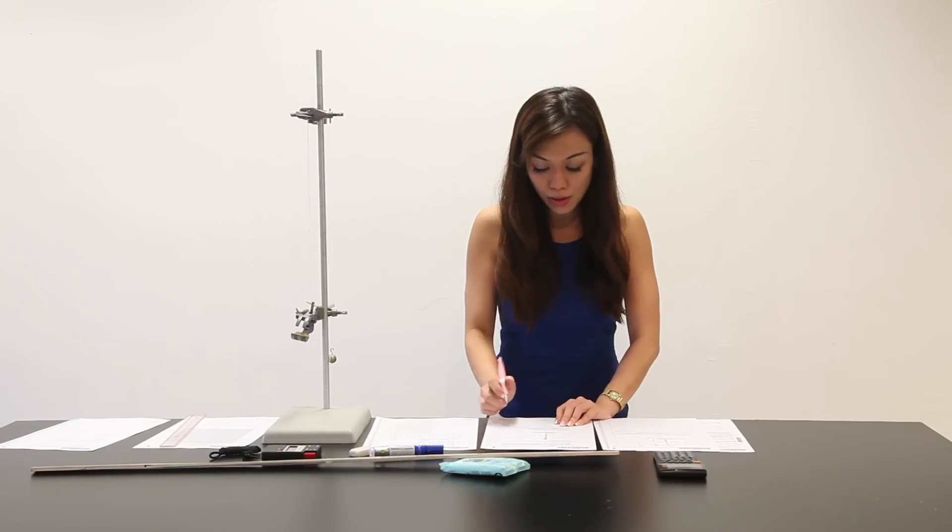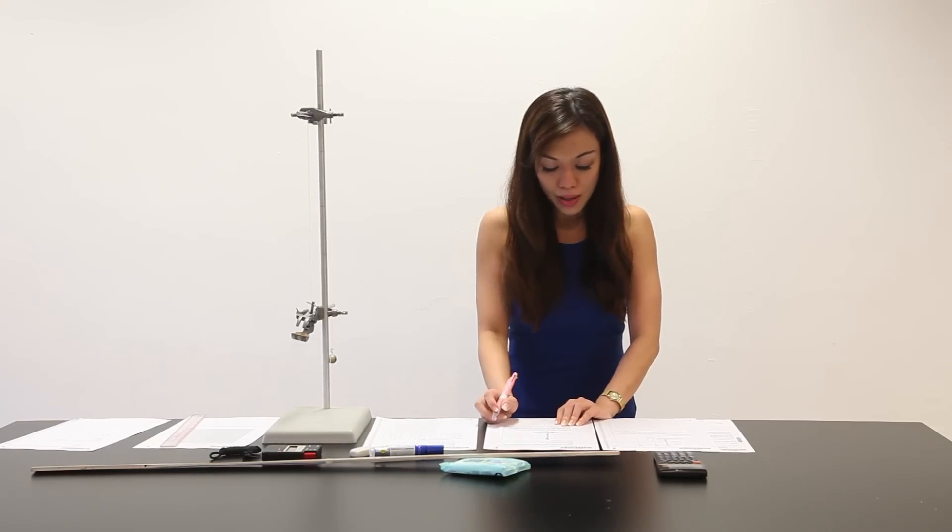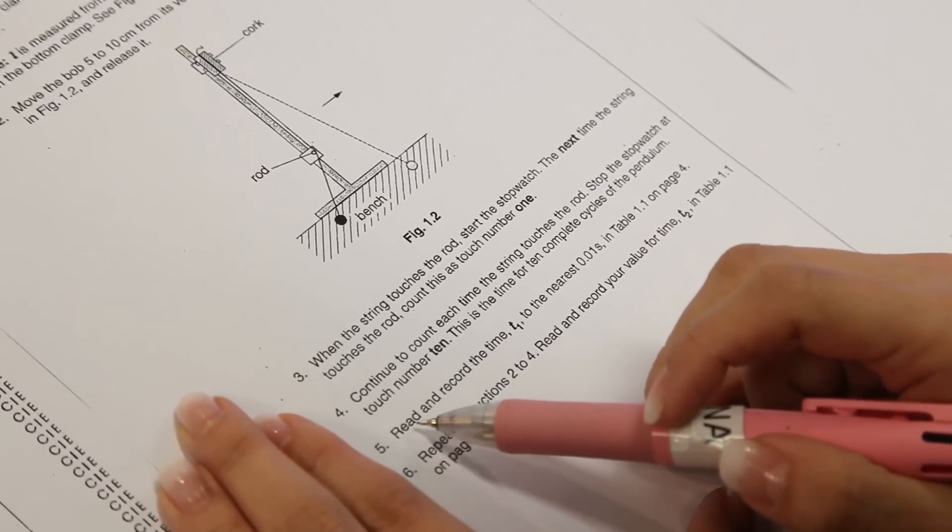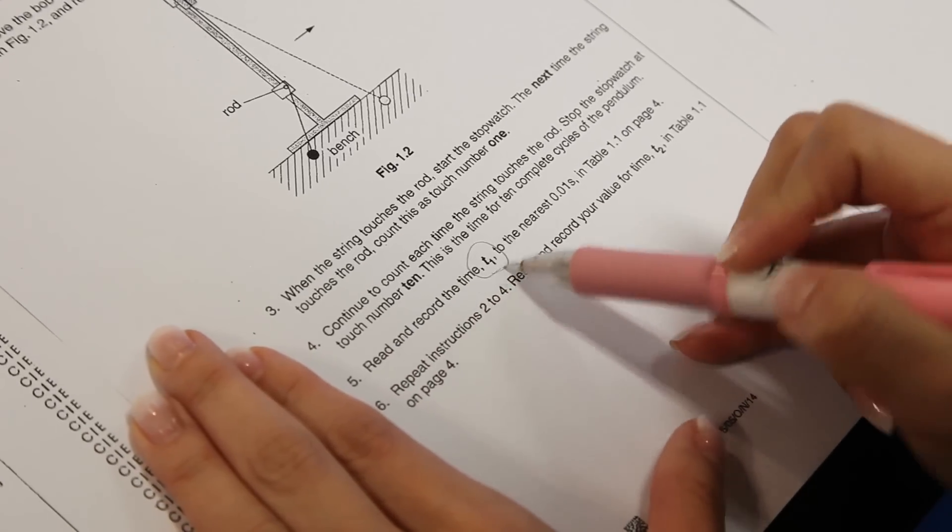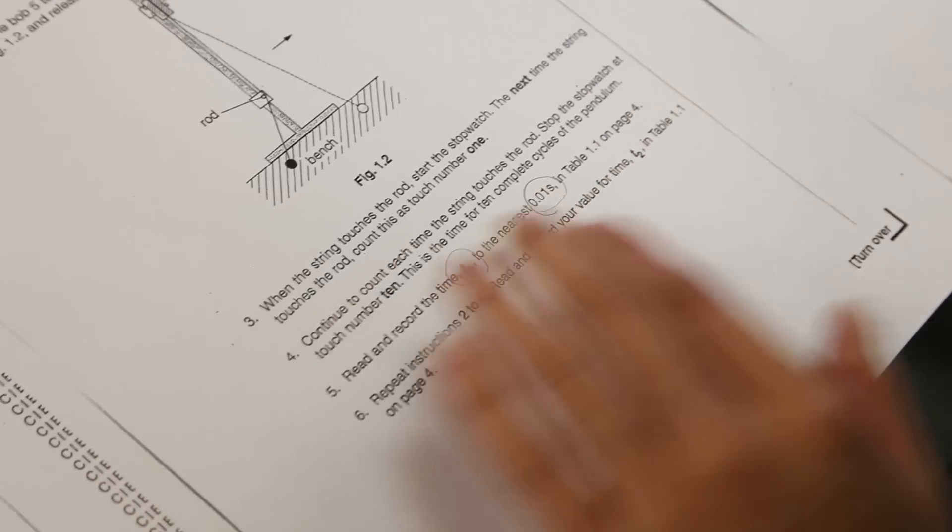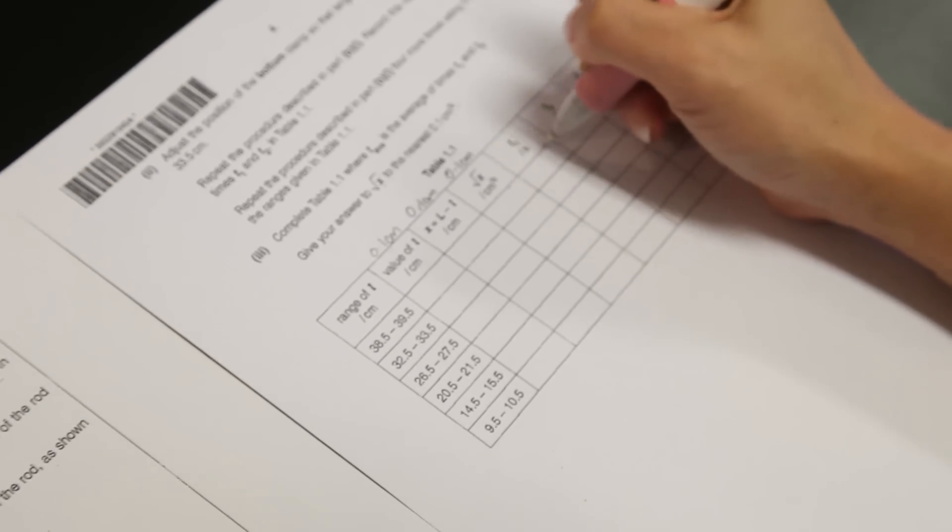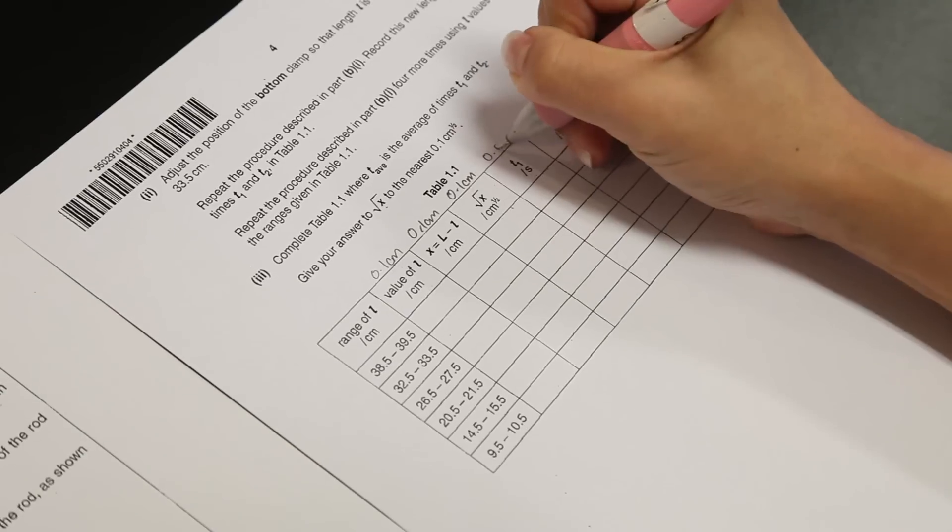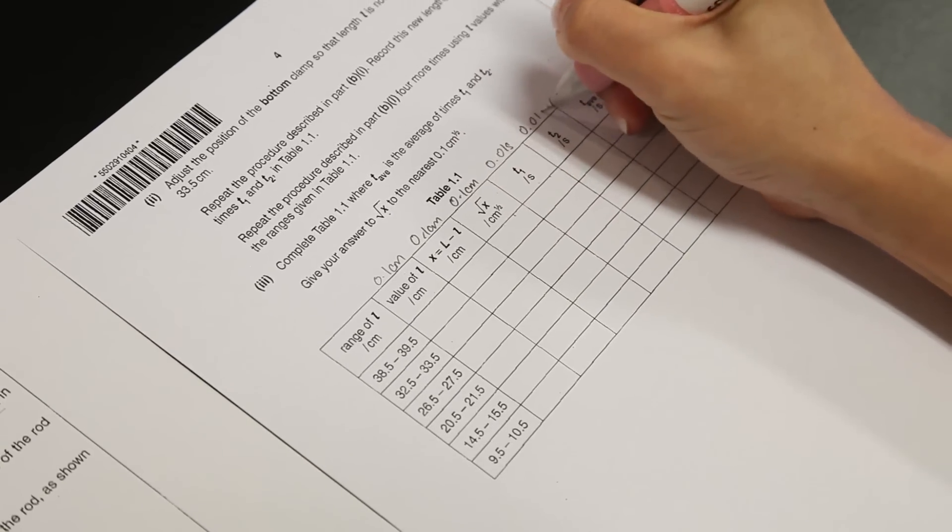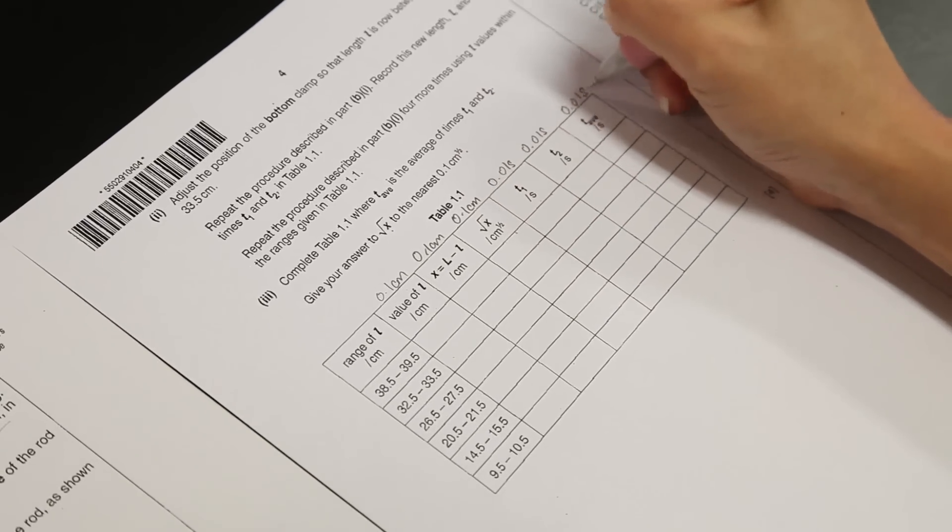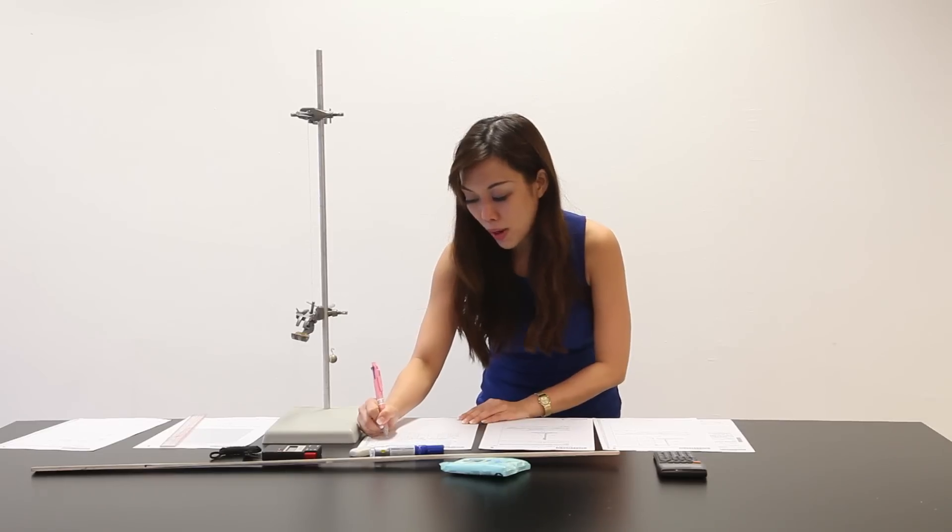This is the time for 10 complete cycles of the pendulum. Part 5 here says, read and record the time t1 to the nearest 0.01 seconds in table 1.1. So, table 1.1, t1 seconds here. Let me write 0.01 seconds, 0.01 seconds, 0.01 seconds. So, 0.01 seconds as well.